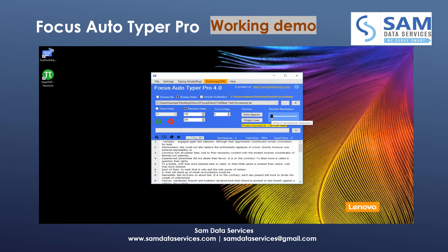You can also add random backspaces to the text — as you increase the frequency bar, the random backspaces will increase. I'm adding a few backspaces here. You can also manually add custom backspaces by selecting a word and clicking add backspace to the selected text. The text is highlighted in yellow, meaning backspaces will be typed there.